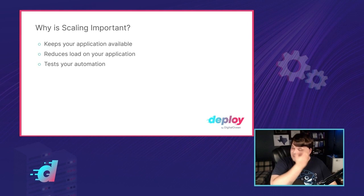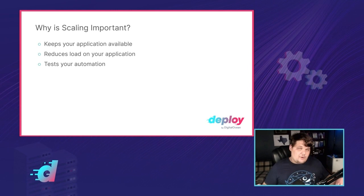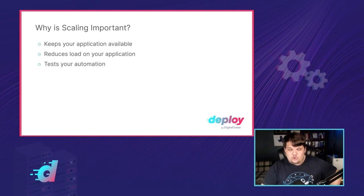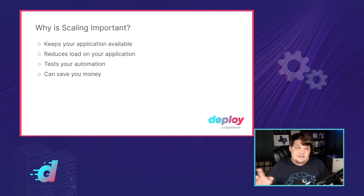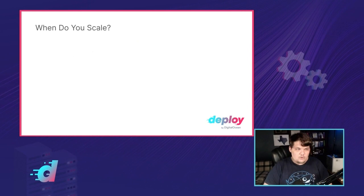Scaling also allows you to test your automation. A lot of automation is built around scaling and testing, so by having scaling incorporated, you can verify that things actually behave the way you want. And probably one of the biggest reasons — the one most people gravitate towards — is it can save you money, either by not losing money because of an outage, or not spending too much money because you have too many resources allocated when you don't actually need them.